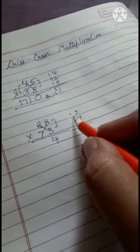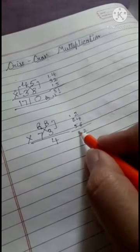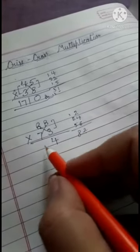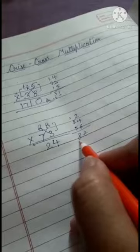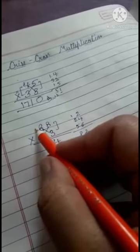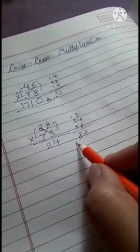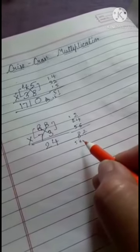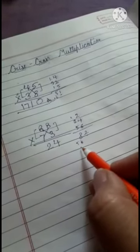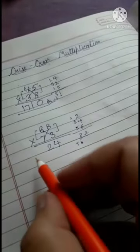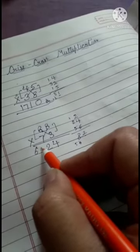1 is carry. 5 plus 7 plus 1 is 8, giving us 82. So write 2 here and 8 is carry. After that, multiply these numbers: 8 times 7 is 56, plus 8 equals 64. So our answer is 6424.